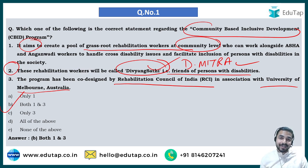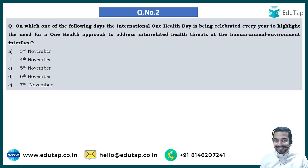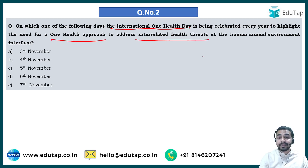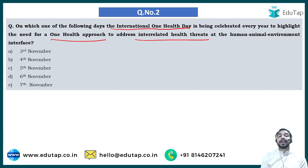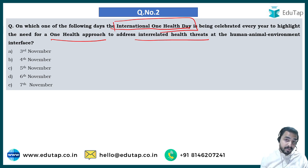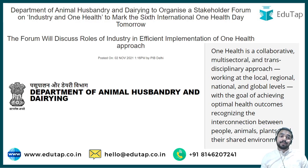Now let's move on to the next question of today's session: on which one of the following days is the International One Health Day celebrated every year, to highlight the need for a one health approach to address the interrelated health threats at the human-animal-environment interface? The options are 3rd November, 4th November, 5th November, 6th November, or 7th November.